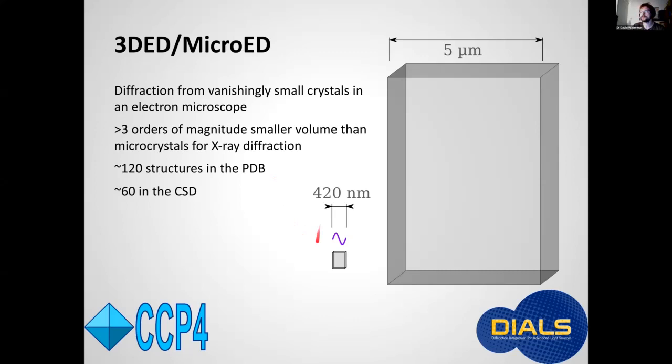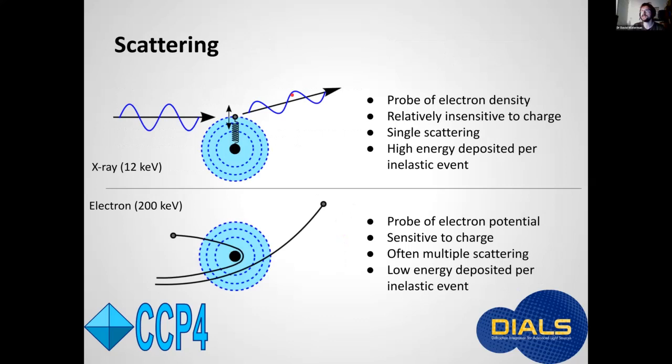Here's a schematic just to show you the scale of a nanocrystal that might be suitable for use in electron diffraction compared to a typical microcrystal suitable for x-ray diffraction at a micro focus beamline of five micron to a side.